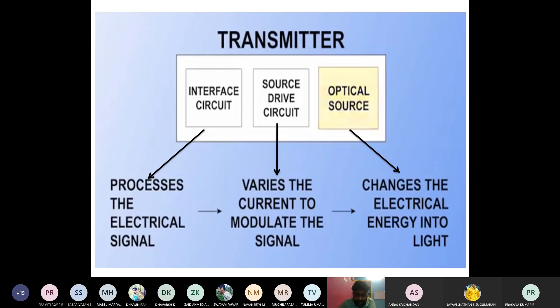Now let's see what the transmitter is. The transmitter transfers the information — it transfers the signal. Inside the transmitter, we have three circuits: the interface circuit, the source drive circuit, and the optical source.